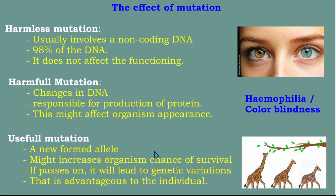The last effect is useful mutation. Useful mutation is when a newly formed allele might increase an organism's chances of survival. A new allele is formed which might increase chances of survival, and if it passes on, it will lead to genetic variation — that is an advantage for the individual. For example, a giraffe with a longer neck, caused by mutation in the gene responsible for neck size, is able to reach leaves even on very tall trees. This is where mutation is useful.